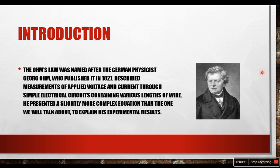At first let's know a little bit about George Ohm. We can see him in the picture. Ohm's law was named after the German physicist George Ohm who published it in 1827, described measurements of applied voltage and current through simple electrical circuits containing various lengths of wire. He presented a slightly more complex equation than the one we will talk about to explain his experimental results.